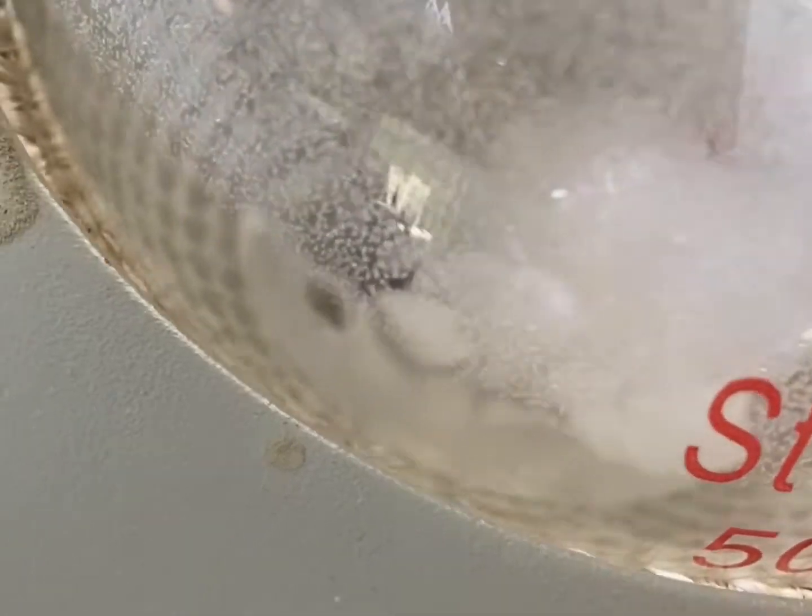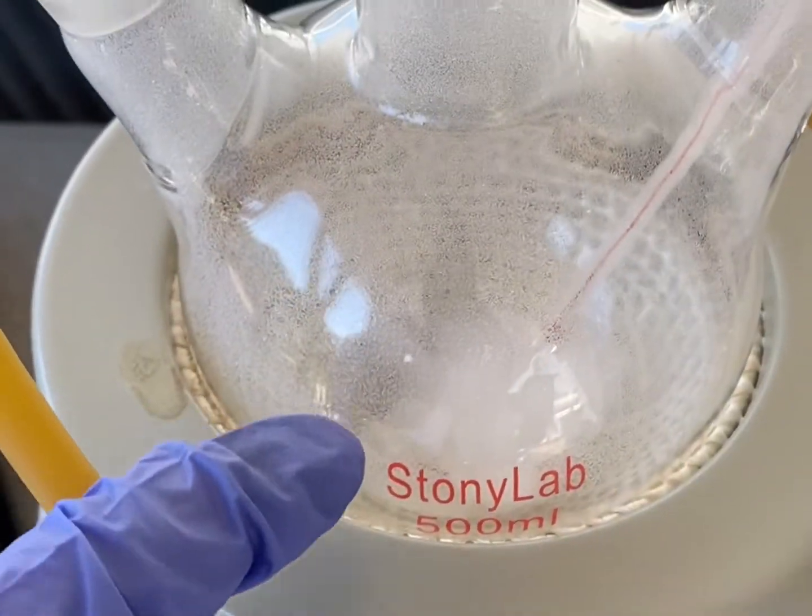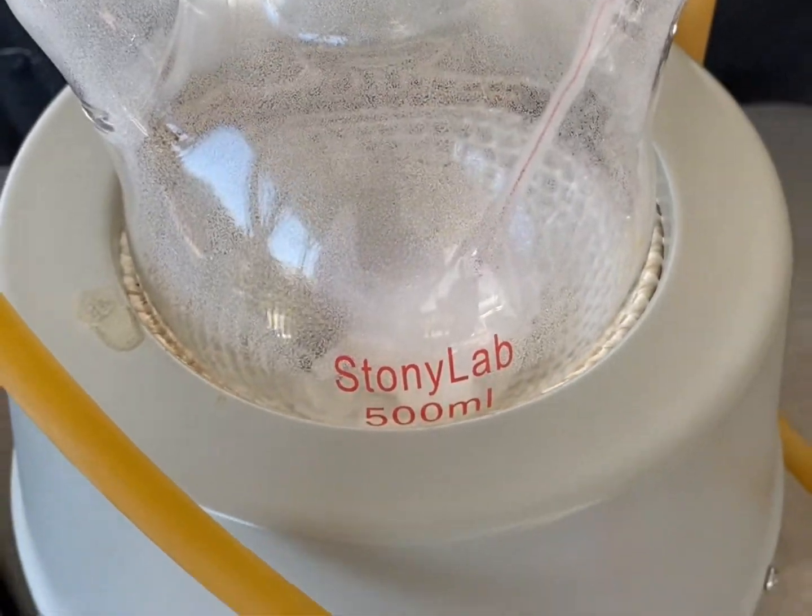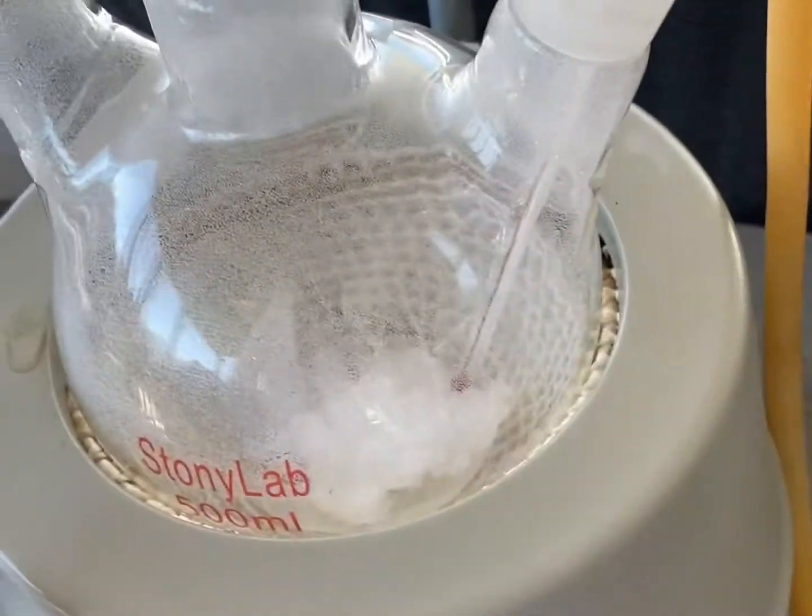So as you can see, the naphthalene is now melting. It's around 100 degrees Celsius. Since naphthalene sublimes, it's subliming and solidifying on the sides of the beaker. If it's too much subliming, we'll blast it with the heat gun and get it to melt off.